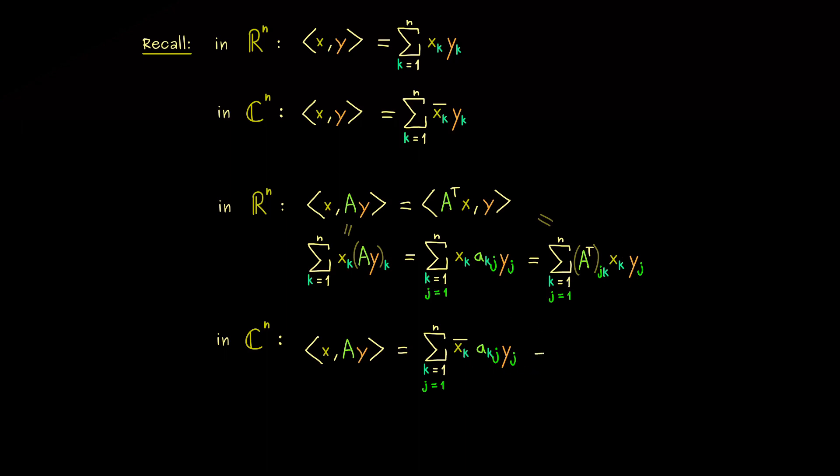However, it changes something if we want to push this entry a_kj to the components of x. Because then, if we want to rewrite that as a matrix vector product as before, we first have to exchange the entries, the indices as before, but we also have to add a complex conjugation. This means we can use the entries of A^T, but we also need the complex conjugation on them.